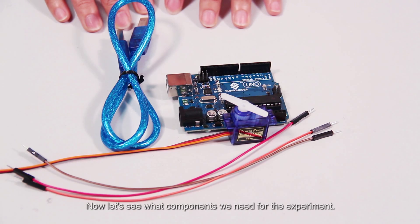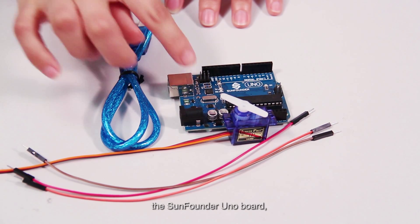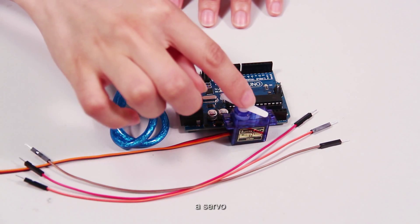Now let's see what components we need for the experiment. The SunFounder Uno board, a USB cable, some jumper wires and a servo.